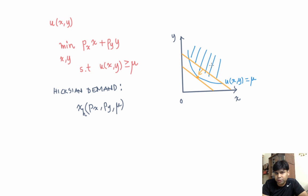The constraint shifts upward and the solution changes. If you change PX or PY, the iso-expenditure curve will have a different slope, leading to a different point that minimizes expenditure. So it's a function of PX, PY, and mu. We'll do an exercise to solve for Hicksian demand in the next video. Thank you.